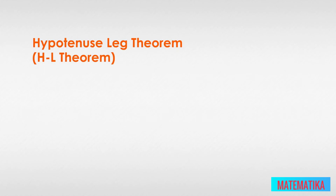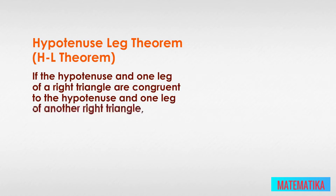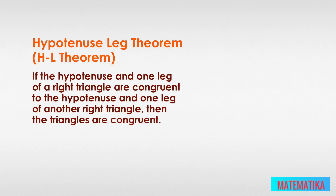The HL theorem states: if the hypotenuse and one leg of a right triangle are congruent to the hypotenuse and one leg of another right triangle, then the triangles are congruent. But wait — this theorem only talks about two sides and doesn't even mention an angle. That's because every right triangle has one given right angle of 90 degrees.